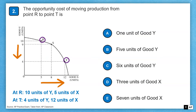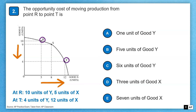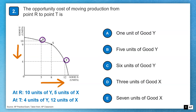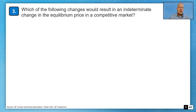Opportunity cost is the highest valued foregone alternative — it's what they're giving up. Those 6 units of good Y are the opportunity cost. Looking at the options: A is 1 unit of good Y — no. B is 5 units of good Y — no. C is 6 units of good Y — yes. D is 3 units of good X and E is 7 units of good X. We already found our answer in evaluating the model. The answer is C, six units of good Y.